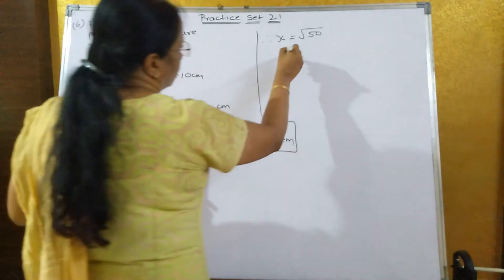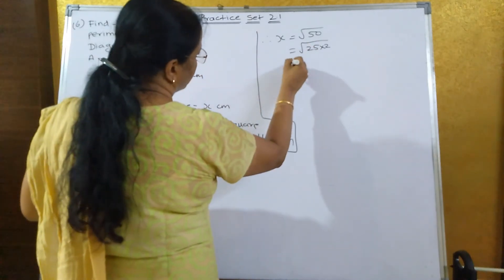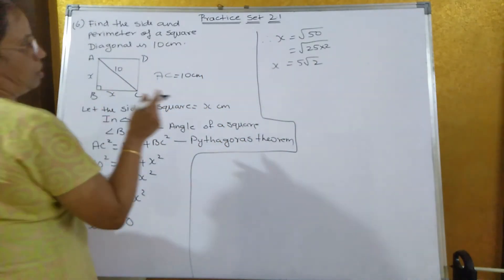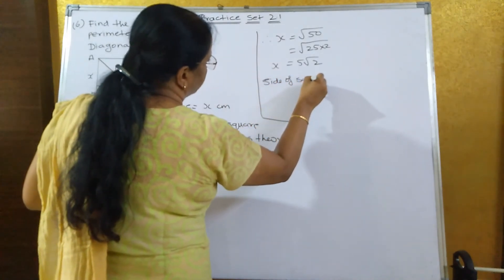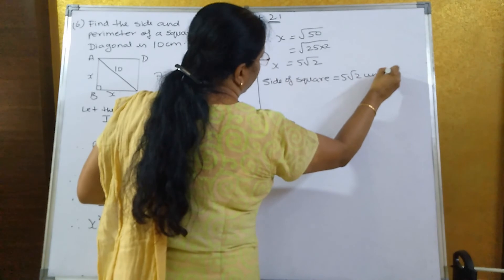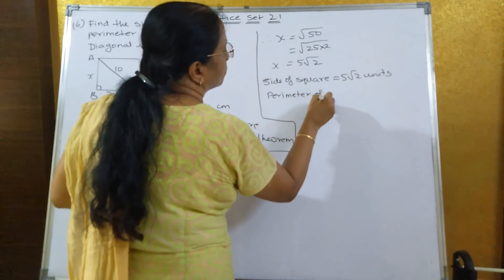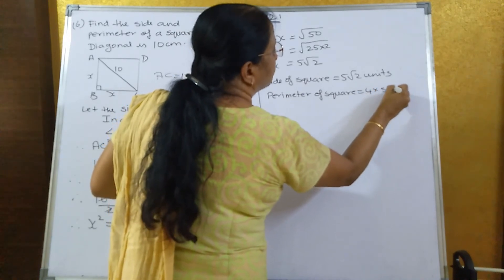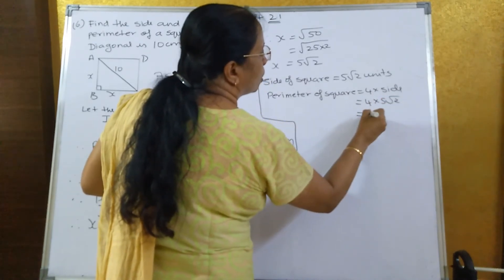Therefore x is equal to the square root of 50, which equals the square root of 25 into 2. Bringing 25 outside the root gives 5 root 2. So the side of the square is 5 root 2 units. Now to find the perimeter: perimeter of a square is equal to 4 into side, that is 4 into 5 root 2, which equals 20 root 2 units.